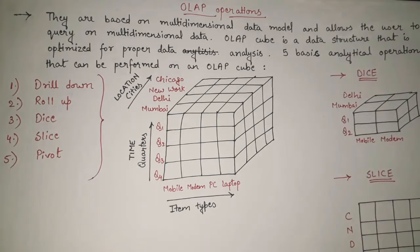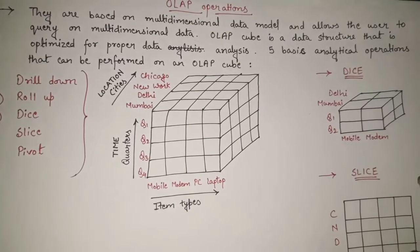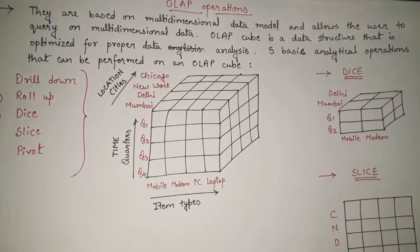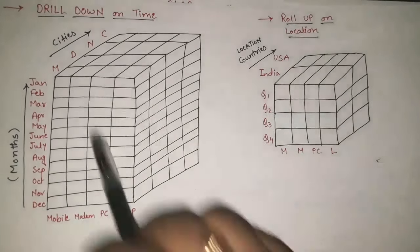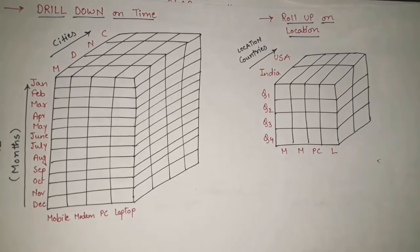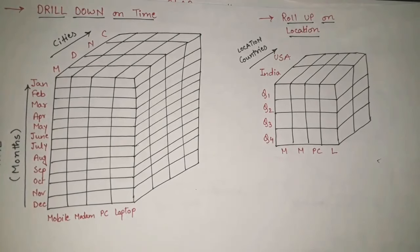These were the five main OLAP operations — drill down, roll up, dice, slice, and pivot — seen in detail. You can take a snapshot or make notes for your exam. I hope you understood all the operations properly. If you liked the video please like and share it, subscribe to the channel if you haven't already, and if you have any doubts you can ask in the comment section. Thank you!